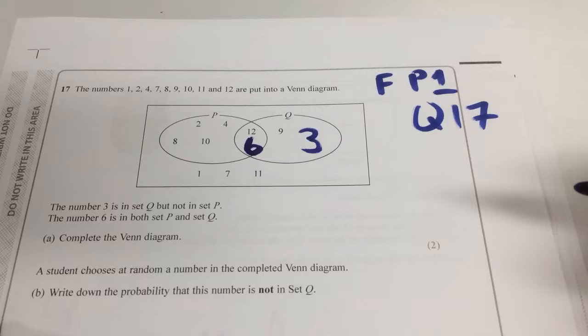Part B says a student chooses at random a number in the completed Venn diagram. I'm going to get the probability that this number is not in set Q. So probability, I need maybe a fraction. Denominator and a numerator. So what do I do for the denominator?